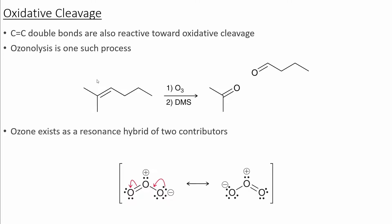If we look at our starting material, we can think of taking a pair of scissors and cutting right down the middle of this double bond and inserting an oxygen on either side. What we result with is two carbonyl groups attached to the original alkyl groups on either side of the double bond. In this reaction, we use ozone and dimethyl sulfide.